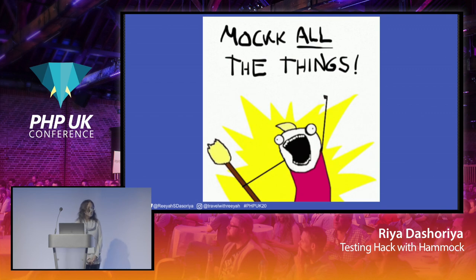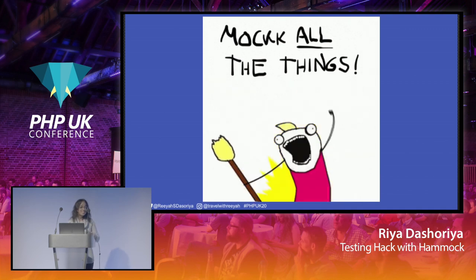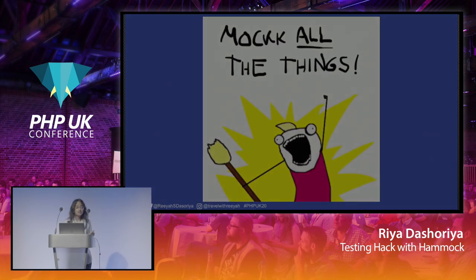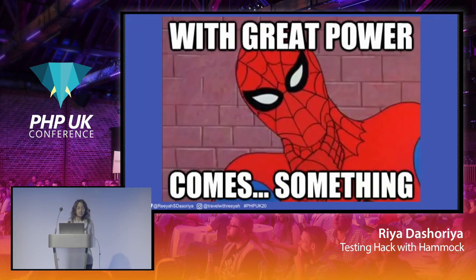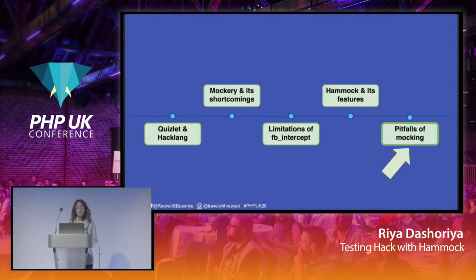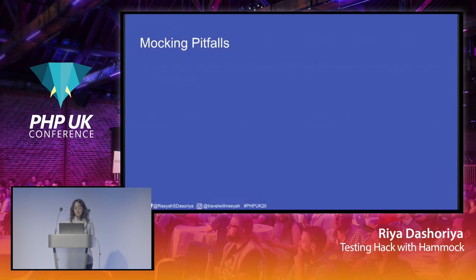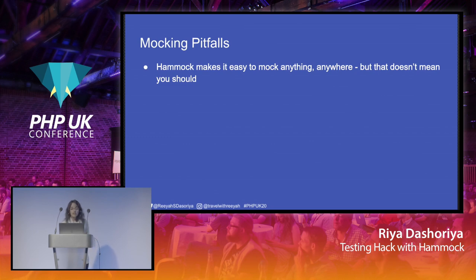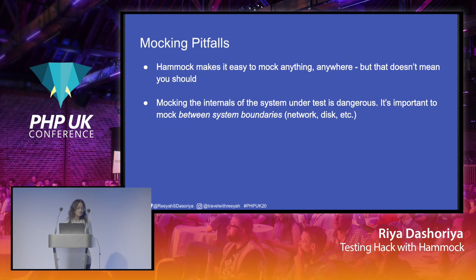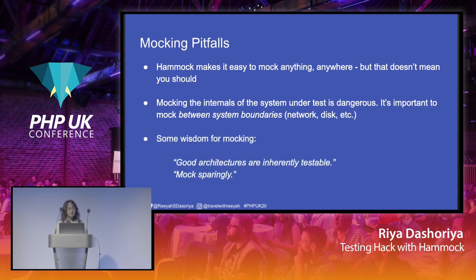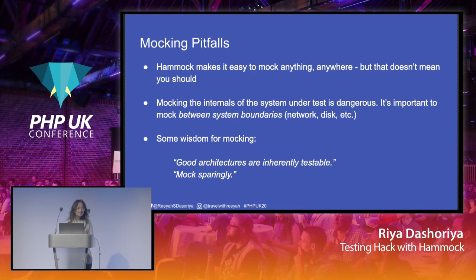Now that mocking is easier and more performant, the instinct might be to mock all the things. But as we know, with great power comes great responsibility. There are some pitfalls of mocking — things you should be mindful of. Even though Hammock makes it super easy to mock anything anywhere, that doesn't mean you should. The less you mock, the more tests will be closer to their true execution. Mocking the internals of the system is never recommended — it is very dangerous. However, it's okay to mock between system boundaries like networks and disk. Good architectures are inherently testable; if it's a good architecture, you should not have to use much mocking at all. Mock sparingly.